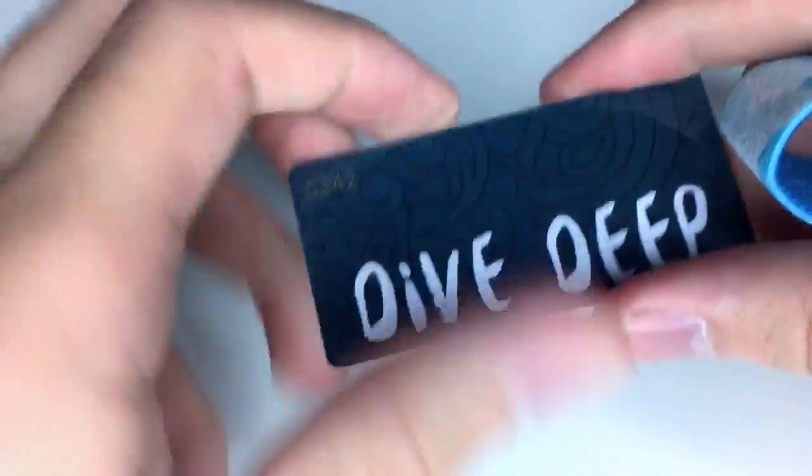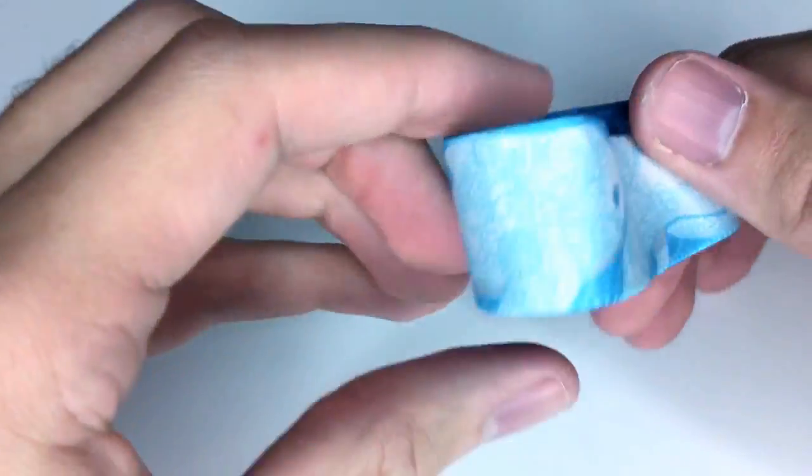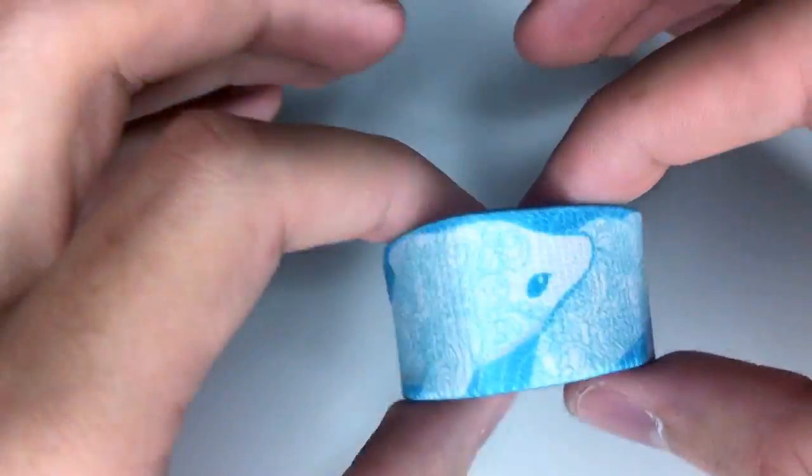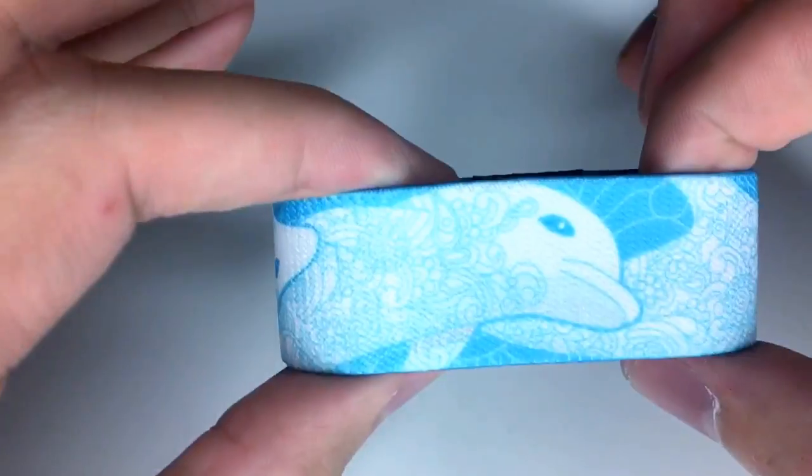Check this beauty out. This is our Dive Deep Bespoke. Here is the card that it comes with, and here is the design. This one turned out absolutely beautiful. I love the blue, the white dolphins, and the intricate hand-drawn pattern.